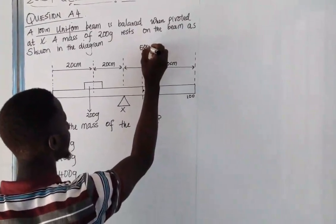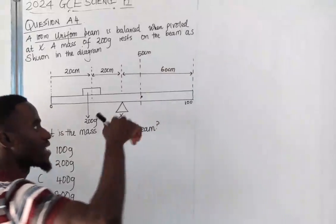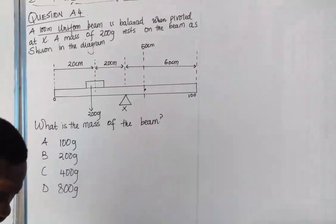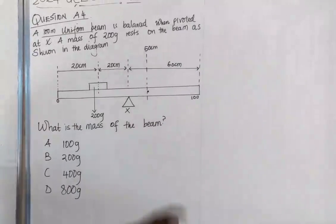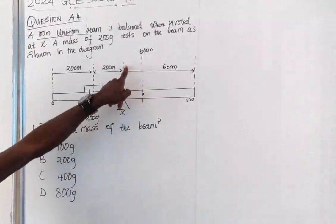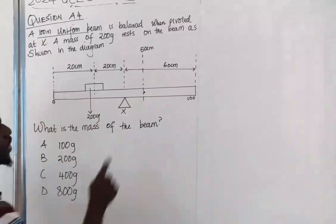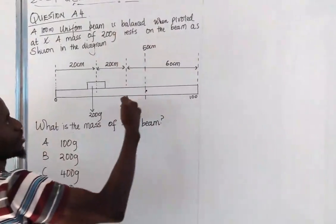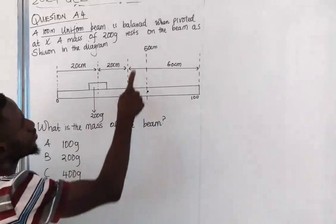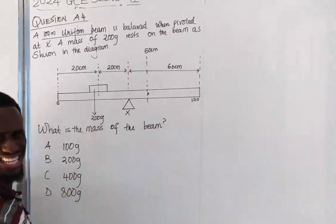This is where the mass of the ruler is concentrated. Now, once you know the center, you'll be able to find this distance from here to there. Remember that from here to there it's 60, here it's 50. That means what could this one be? 10.